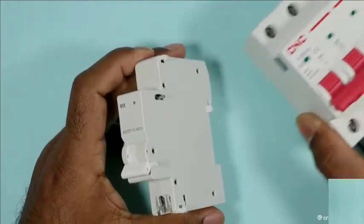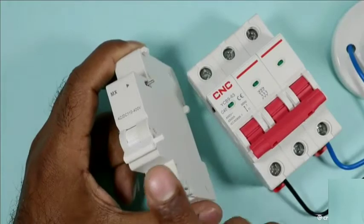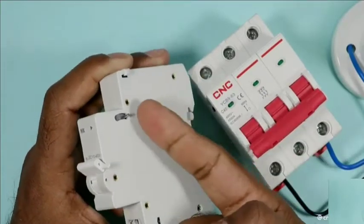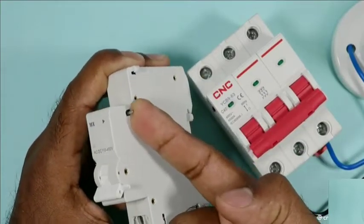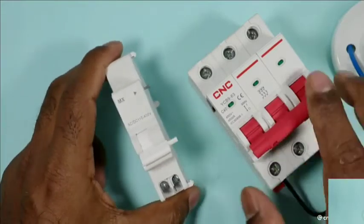This means with the help of this we can trip our MCB. As you can see the lever of coil, if I push this upwards and try to push the knob upwards, this coil will trip. Same thing happens in MCB.